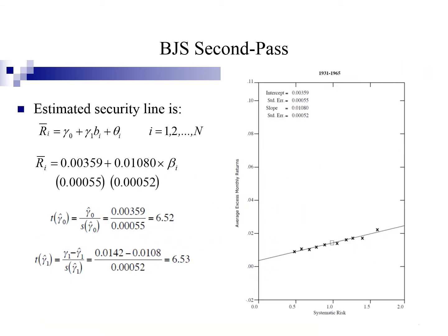This slide shows the result of the BJS second-pass regression for the full sample period from 1931 to 1965. Both gamma 0 and gamma 1 are found to be significantly different from zero. The figure shows that systematic risk can explain the average excess monthly return. The security market line is an up-sloping line, meaning the higher the beta, the higher the excess return.